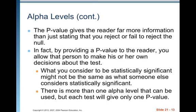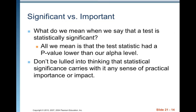The p-value gives the reader far more information than just stating that you reject or fail to reject the null. By providing a p-value to the reader, you allow that person to make his or her own decisions about the test. What you consider to be statistically significant might not be the same as what someone else considers statistically significant. There is more than one alpha level that can be used, but each test will give only one p-value. All we mean by statistical significance is that the test statistic had a p-value lower than our alpha value — that's it.